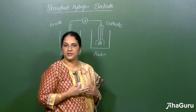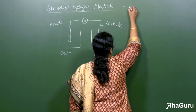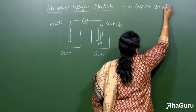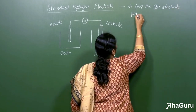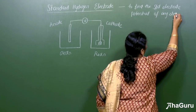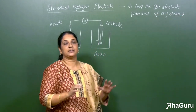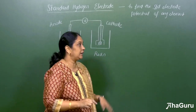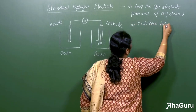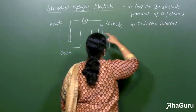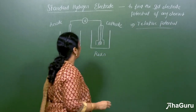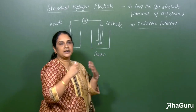The use of the standard hydrogen electrode is to find the electrode potential or the standard electrode potential of any element. We never calculate the absolute value — we always calculate the relative potential. This relative potential can only be calculated by keeping the standard hydrogen electrode as a reference.